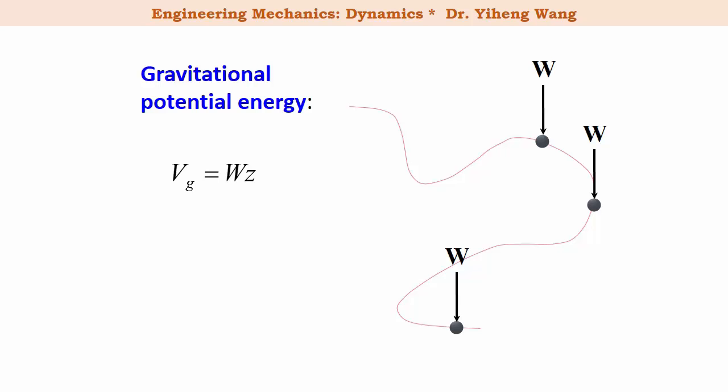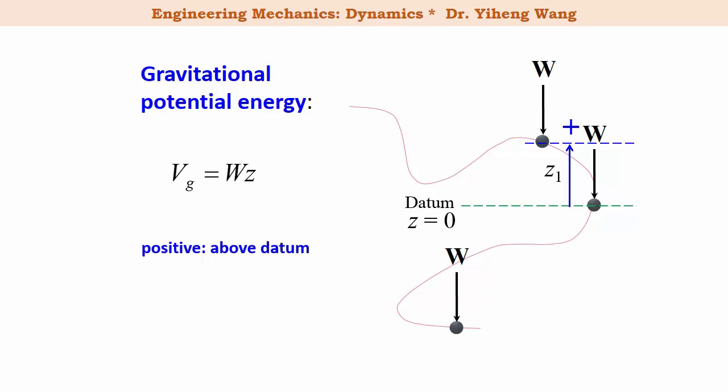Potential energy is normally denoted by the letter V, and the gravitational potential energy Vg, which is the potential energy associated with the weight of an object, equals its weight W multiplied by its vertical location Z. Its vertical location can be represented by other letters depending on what coordinate system you choose. To calculate the gravitational potential energy we first need to draw a datum where the vertical location Z is zero. For any location above this datum Z is positive, and the gravitational potential energy is positive. For any location below this datum Z is negative, and the gravitational potential energy is also negative.